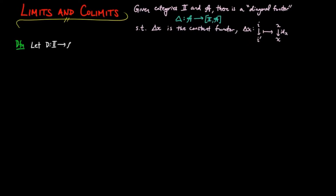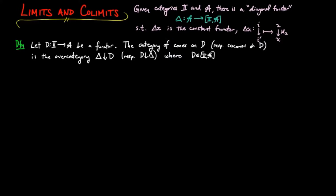So if we are given a functor D from I to A, we will also call this functor a diagram in A. The category of cones on D, respectively co-cones on D, is defined to be the over category delta over D, respectively D over delta, where D, as an object in the category of functors from I to A, is viewed as a functor from the terminal category to the functor category.